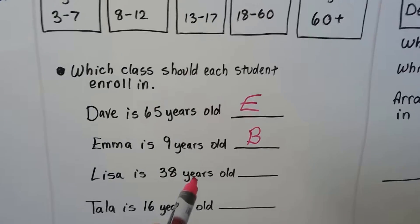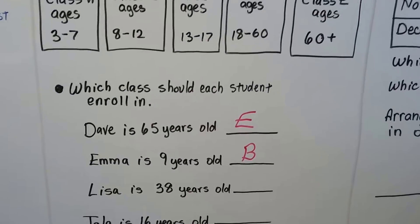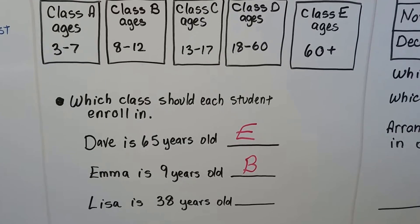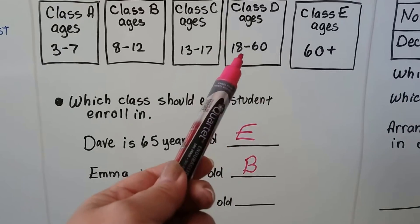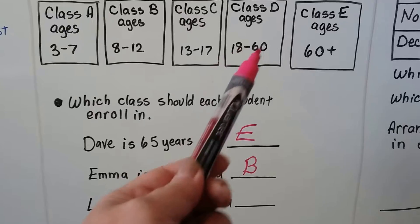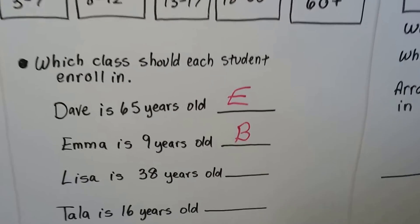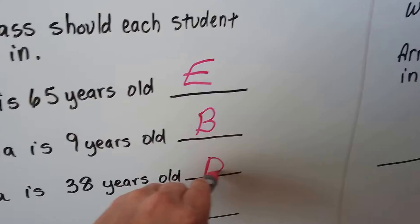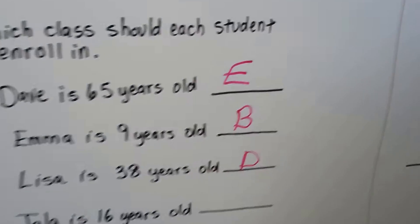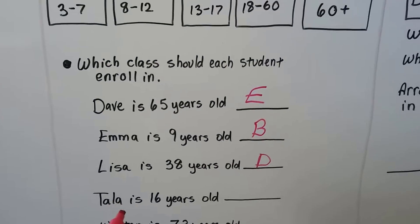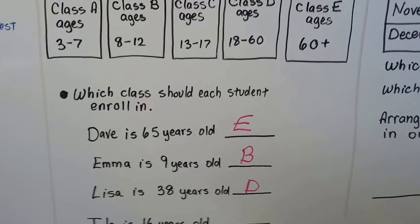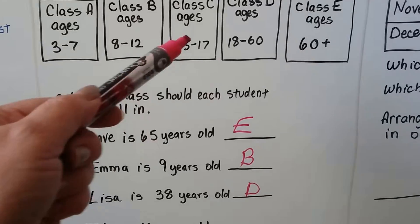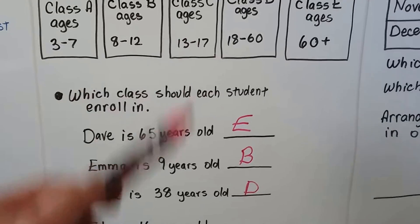Lisa is 38 years old. Which class would she be in? She'd be between the 18 and 60 year olds, so she's in Class D. Tala is 16 years old, so where would Tala be? She would be in Class C with the teenagers.